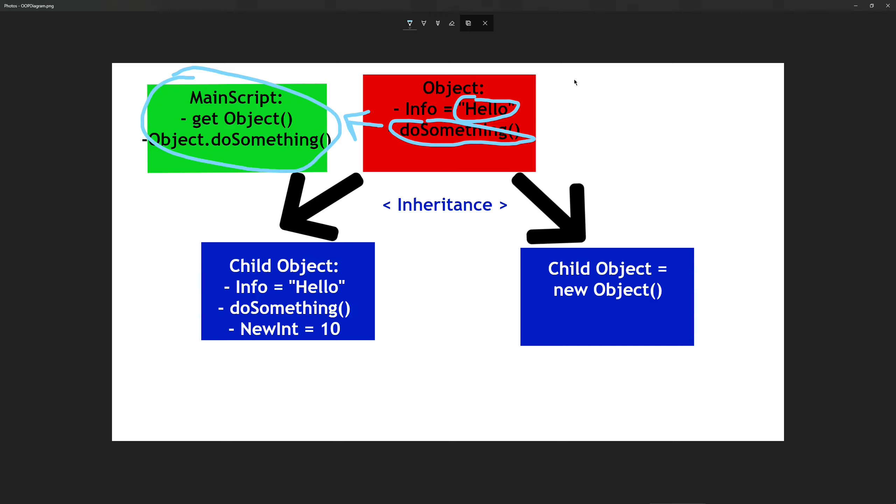What you can also do with objects is use inheritance, and this saves a lot of time when making your code. This follows that same idea of copying and pasting, where if a child object inherits another object, it takes all of its properties and functions that it specifies and gives it to the child.